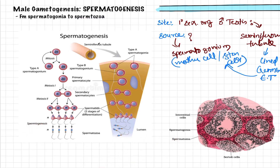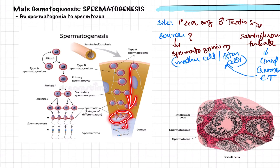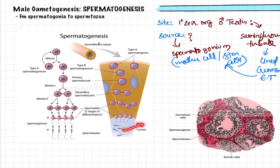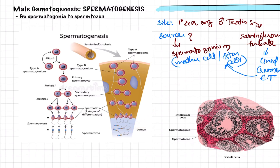Students often confuse spermiogenesis and spermiation, but don't worry — it will be explained in detail in another slide. As the cells divide by either mitosis or meiosis, they are moving towards the lumen so that they can be released into it at the end. After release into the lumen, the sperms pass outside the body via different ducts — that concept was covered in the previous class.